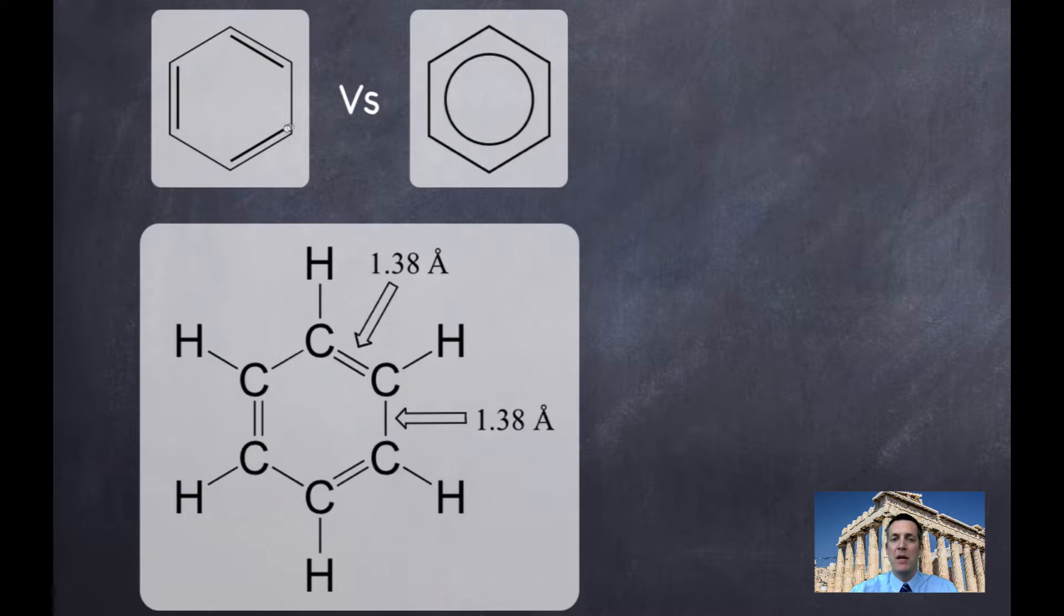So if we could somehow measure the length of the bonds in these rings, which we can, using x-ray techniques, we should be able to decide which one of these is closer to the truth. And in actual fact, when we've measured benzene, we've discovered that all the bonds in the ring are actually exactly the same length, which means that this model here can't be quite right. It can't have single and double bonds. Something must have happened to those electrons that means all these bonds are identical.